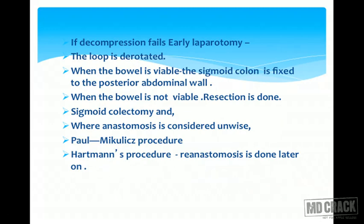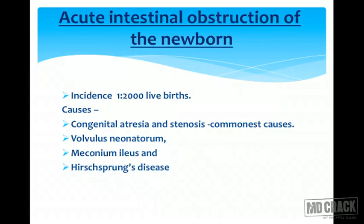The loop is derotated. When the bowel is viable, the sigmoid colon is fixed to the posterior abdominal wall. When the bowel is not viable, resection is done. Sigmoid colectomy is performed where anastomosis is considered unwise — Paul Mikulicz's procedure or Hartmann's procedure is done and reanastomosis is performed later.